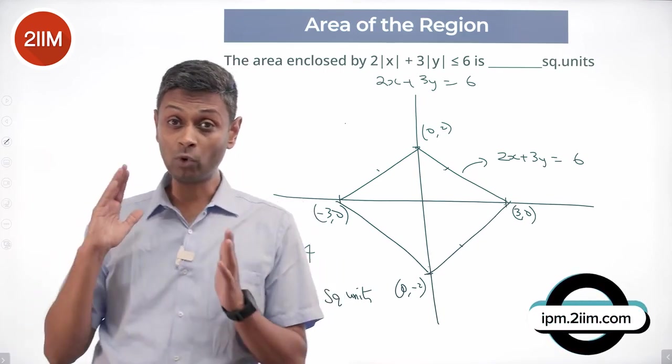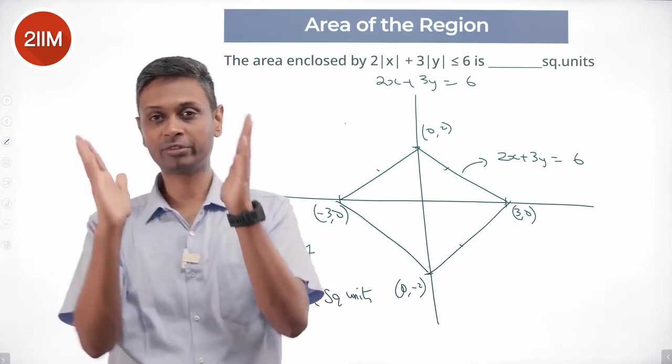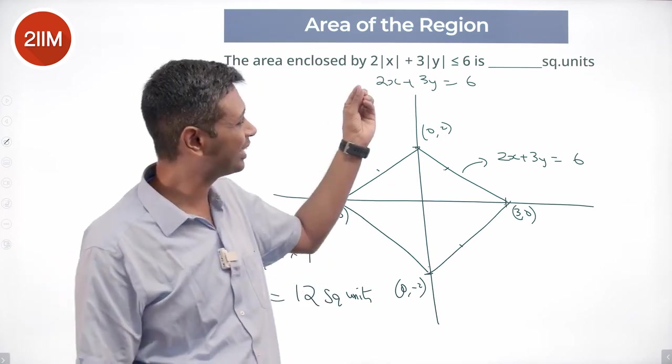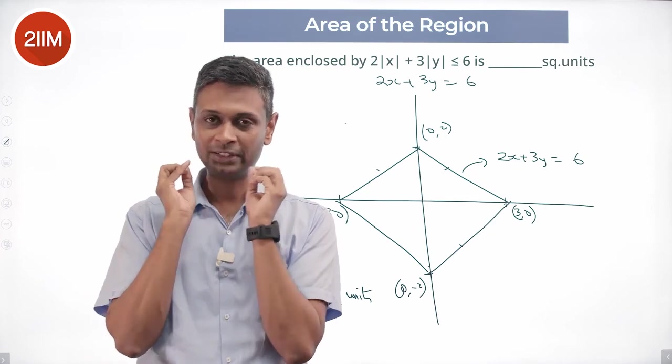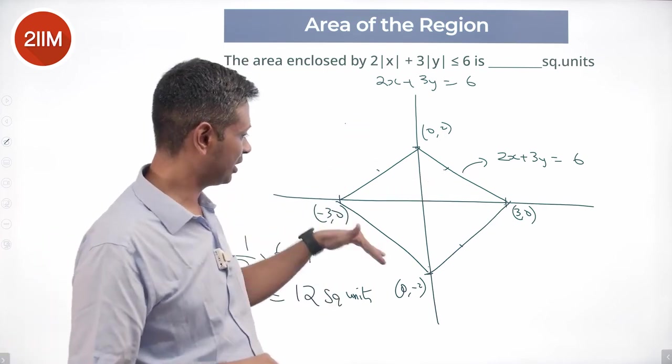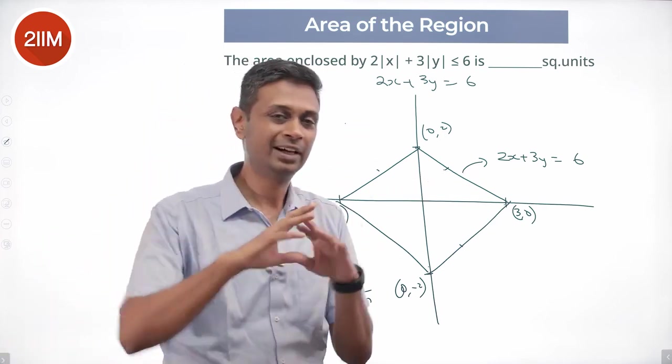Beautiful question to drive home the idea of thinking about modulus. When mod x and mod y is involved, draw in the first quadrant, nice and simple. Take that shape, extend that shape. We already made sure it will be symmetric all over the board. Then we are through and simplify everything after that.